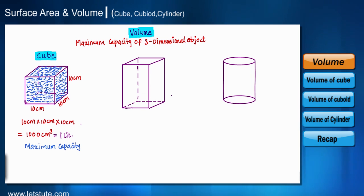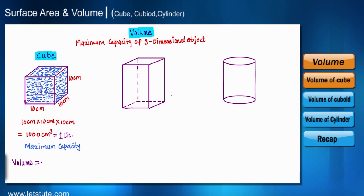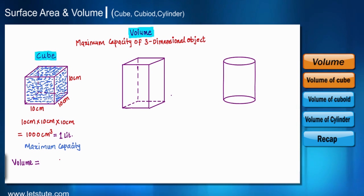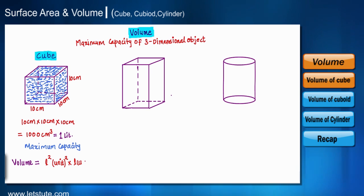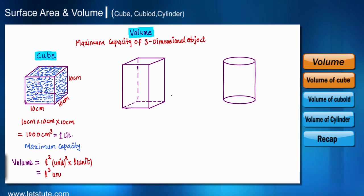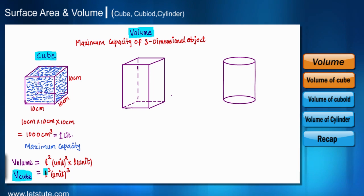Now let's write the general form of the equation for the volume of any cubical shape. If a cubical container has length l centimeter, then the area of the base is l squared and the height is also l. Multiplying the area of base, l squared, by the height, l, gives us l cubed. So the general form of volume of a cube is l cubed unit cubed.